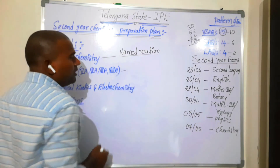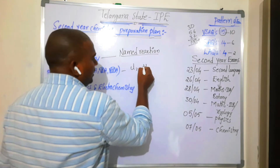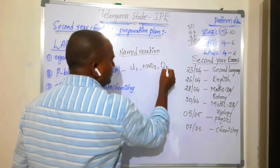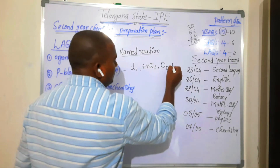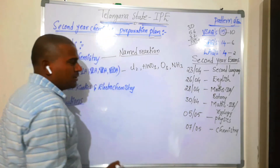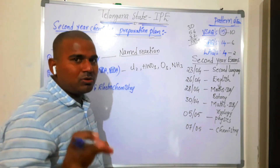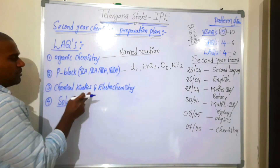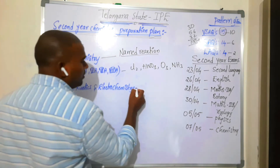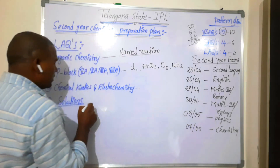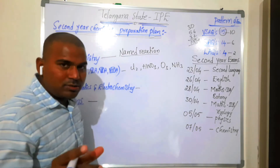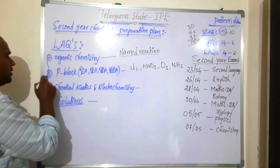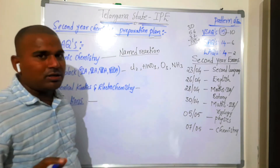P-Block includes chlorine preparation, nitric acid preparation by the Ostwald process, ozone preparation, and also ammonia preparation and properties. If we need to confirm a question, these are reaction-related questions. Chemical kinetics and electrochemistry have a long answer. In solutions, the concept is a problem. Therefore, we have a long answer for these four chapters.